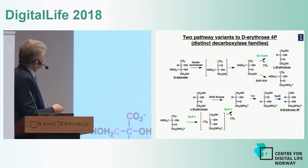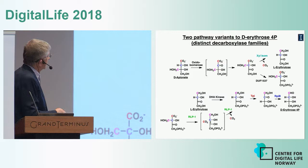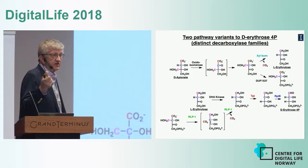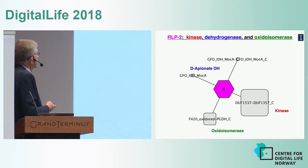We have two variants that converge on the same product: one where a xylose isomerase family member acts as a decarboxylase first, followed by phosphorylation; and another where phosphorylation occurs first, followed by decarboxylation with the Rubisco-like protein. Both give D-erythrose-4-phosphate.